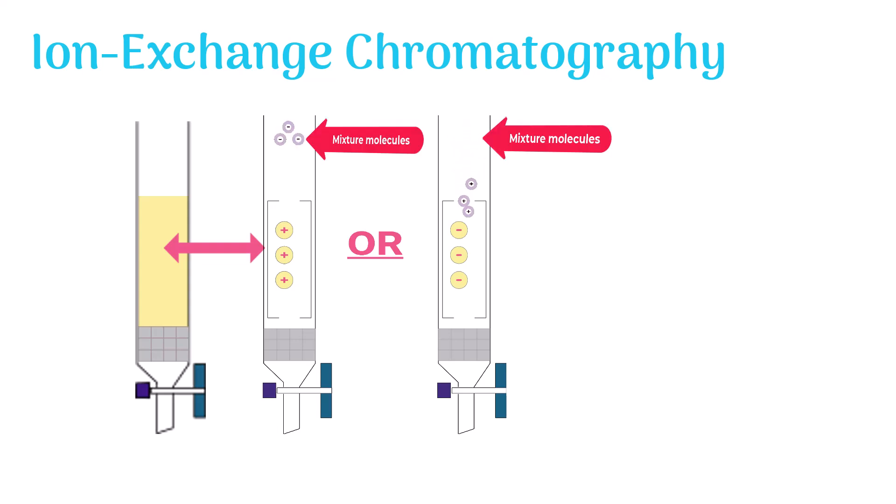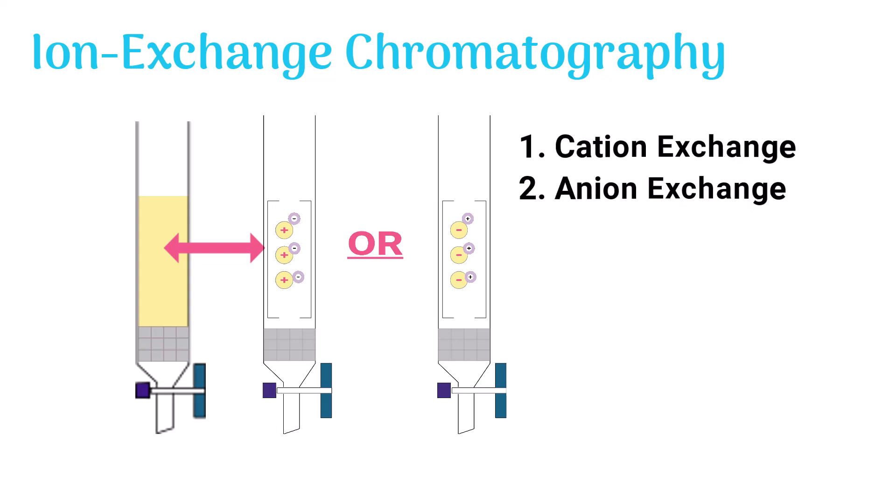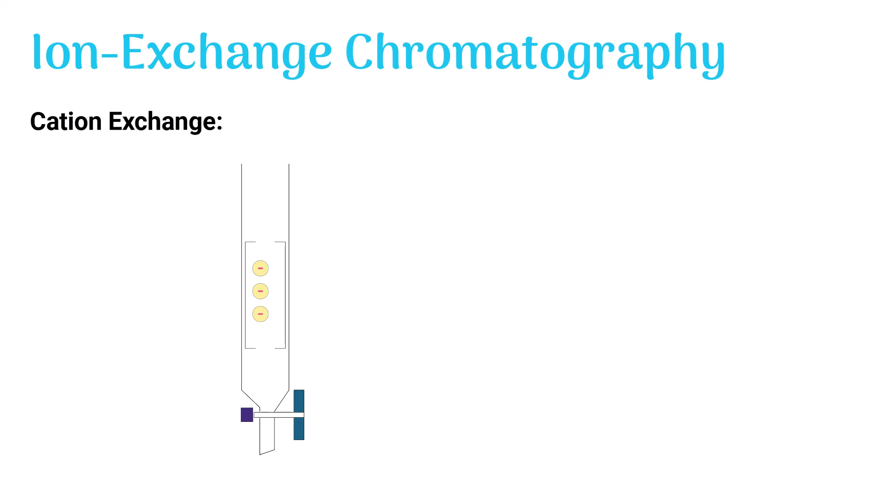It attracts the oppositely charged molecules from the mixture. Depending on the requirement, ion exchange chromatography operates in two modes: cation exchange and anion exchange. In case of cation exchange, the stationary phase has negative charges on it.